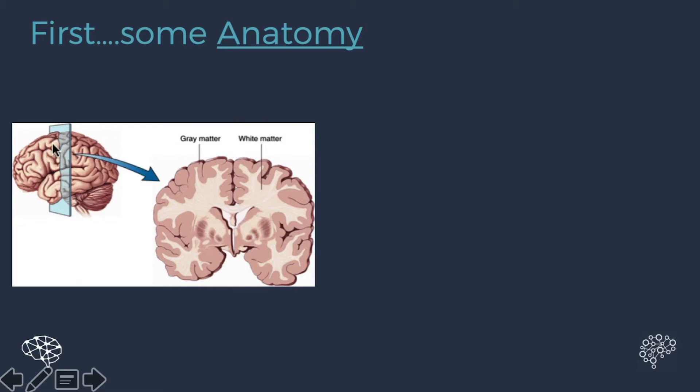So first, let's have some anatomy. This is the brain right here. If we look at the brain and cut it in half, you would see two different tissue layers.